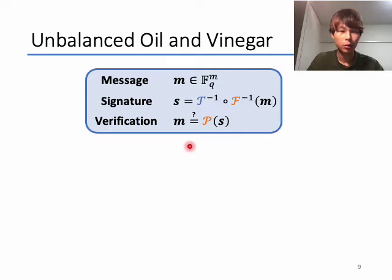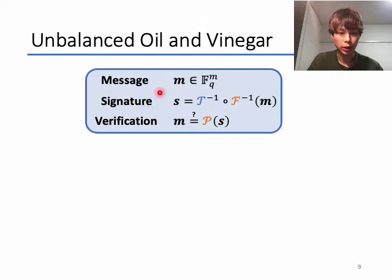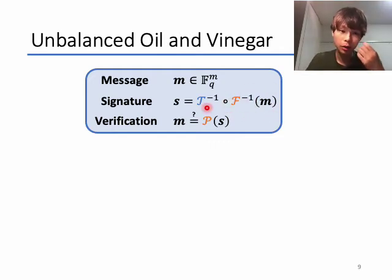By using these public and secret keys, signature generation and verification are performed as follows. We choose a message M in Fq^M. The signature S is generated as S = T_inverse(F_inverse(M)). Verification is performed by confirming that M equals P(S) using the public key P.